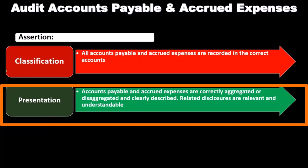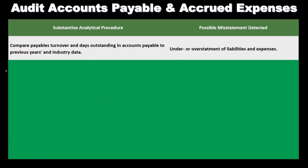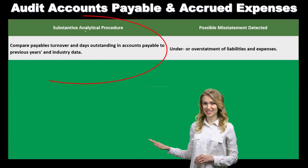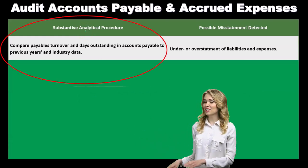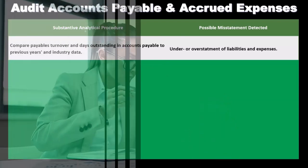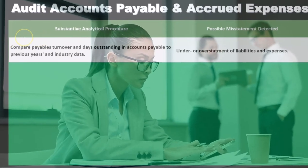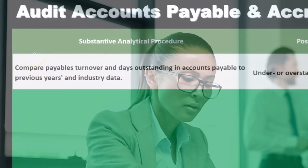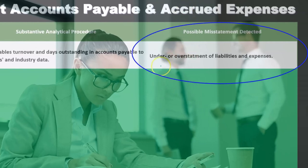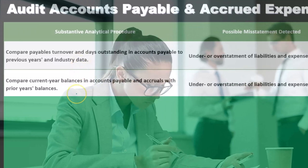Now we will discuss substantive analytical procedures — those analytical procedures we can do in the auditor's office, such as comparison and ratio analysis activities. We can compare payables turnover and days outstanding in accounts payable to prior years and industry data. The possible misstatement we would detect is under or over statement of liabilities and expenses.